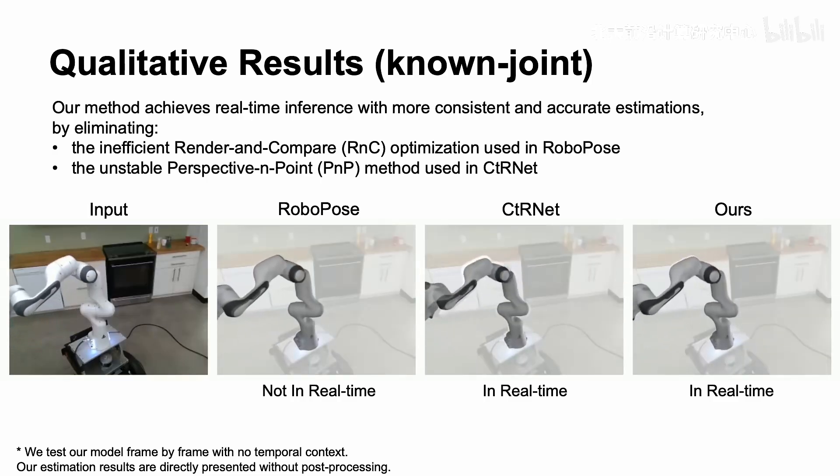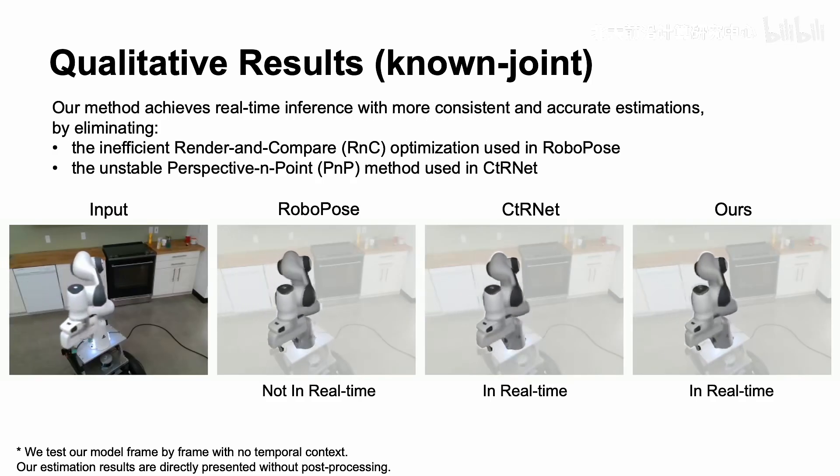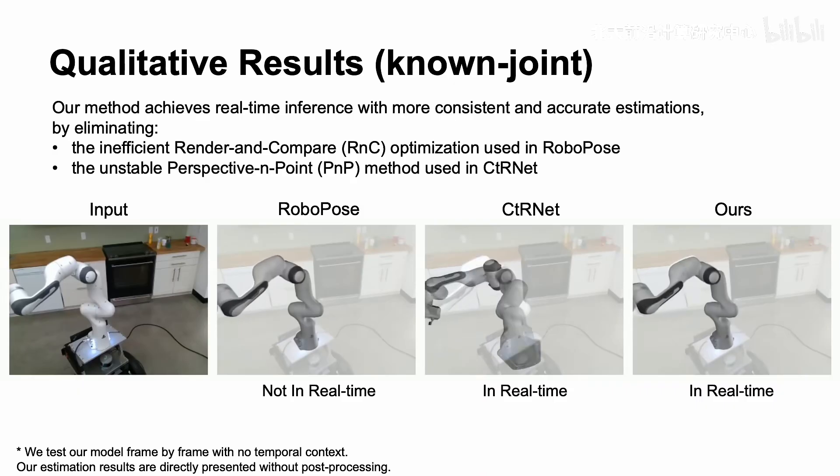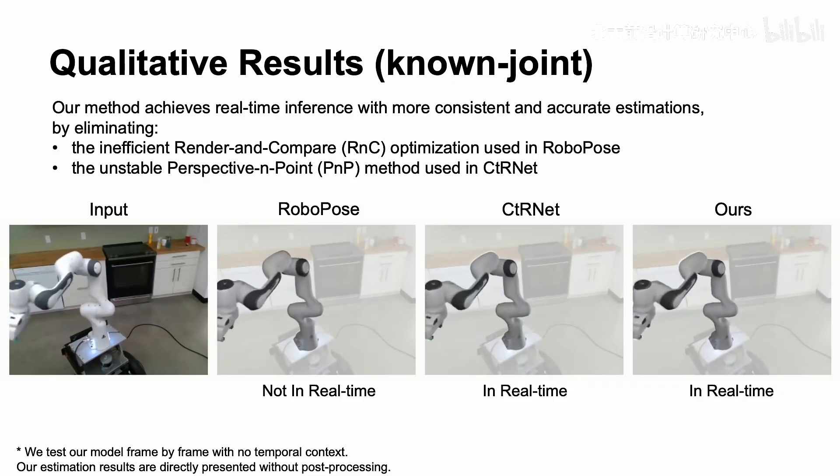Free of RNC, our approach achieves a 12x speed boost compared with RoboPose. Without PNP methods, our approach demonstrates higher accuracy and robustness compared with CIRNet.